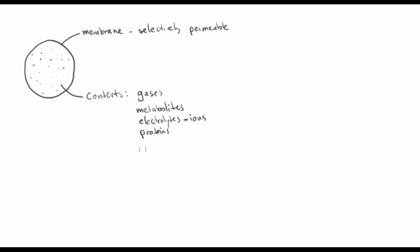The greater the number of solute particles, the greater the demand for water molecules in that solution. We see this when there's a concentration gradient across the selectively permeable membrane. If a cell is surrounded by fresh water — something having very close to zero solutes — there are no particles outside commanding the attention of water molecules. Inside the membrane we've got solutes commanding more demand for water, so we get movement of water into the cell.